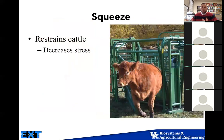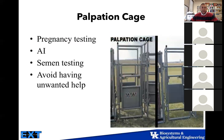The squeeze chute is designed to restrain cattle and decrease stress — it can be essential when you're trying to work animals and give vaccinations. The palpation cage isn't necessarily required, but it is beneficial if you're doing a lot of pregnancy testing, AI synchronization, or semen testing of bulls. It helps you avoid unwanted help and allows easy access for these production purposes.